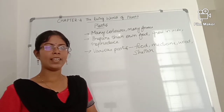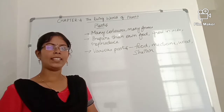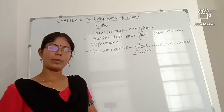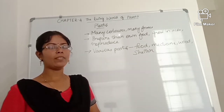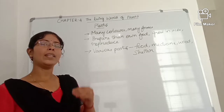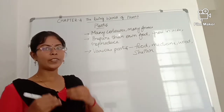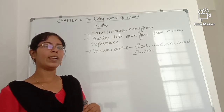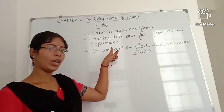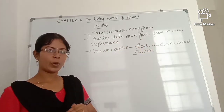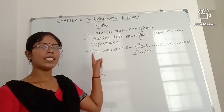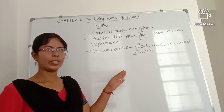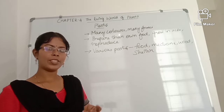Let us say some basic things about plants. Plants have many colors like red, pink, and reddish pink, and they are in many forms — short plant, long plant, flowering plant, non-flowering plant. Plants prepare their own food and they grow in size from a small plant to a large plant. They also reproduce.